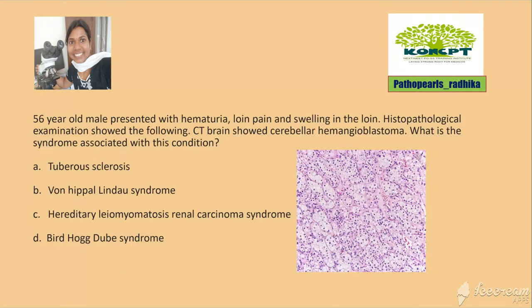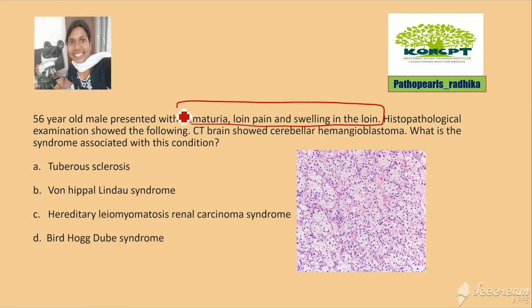Moving on to the question: a 56-year-old male presented with hematuria, loin pain, and swelling in the loin. Histopathological examination is shown below; CT brain showed cerebellar hemangioblastoma. What's the syndrome associated with this condition? The patient is having hematuria, flank pain, and flank swelling — this triad is seen in renal cell carcinoma.